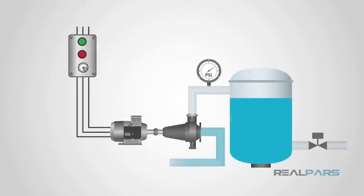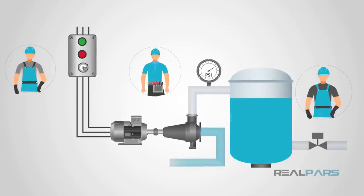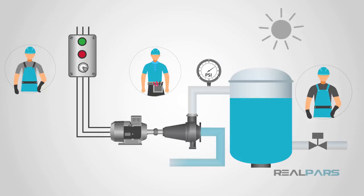Before SCADA, plant personnel had to monitor and control industrial processes via selector switches, push buttons, and dials for analog signals. This meant that plants had to maintain personnel on-site during production in order to control the processes.